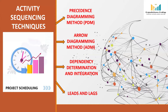Activity sequencing is a critical step in project scheduling, where activities are arranged in the order in which they must be performed. It establishes the relationships and dependencies among activities to ensure a logical progression through the project timeline. Understanding the flow and dependency between tasks helps in the effective management of resources, timelines, and potential risks.